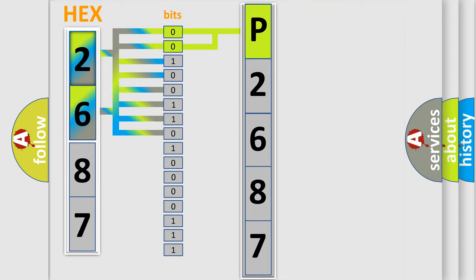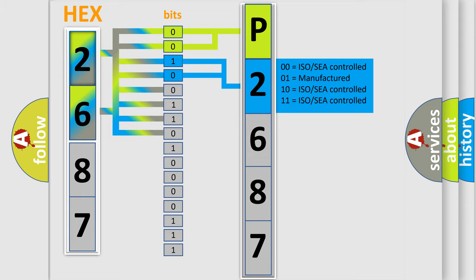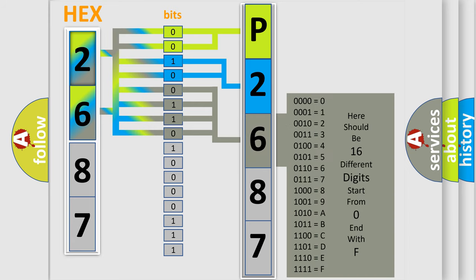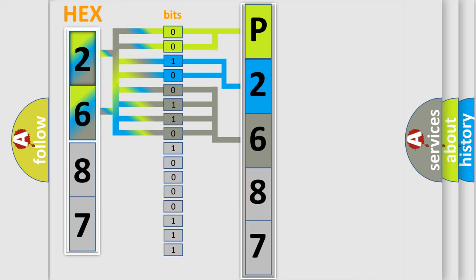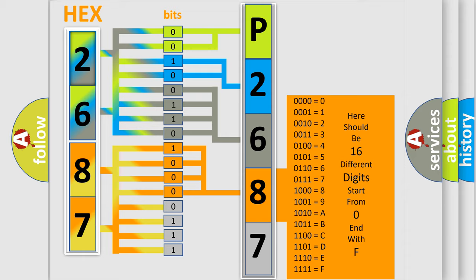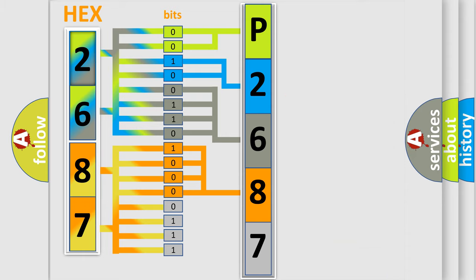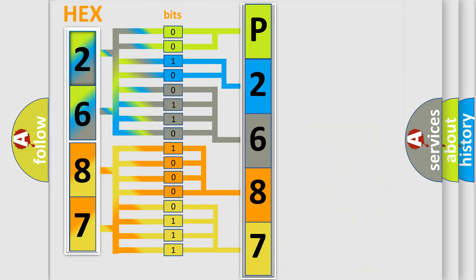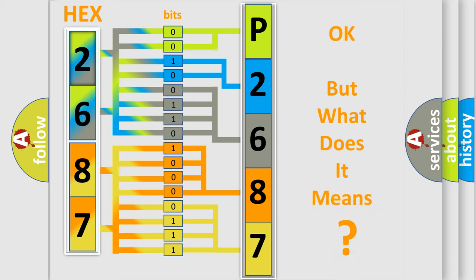The next two bits determine the second character. The last bits of the first byte define the third character of the code. The second byte is composed of a combination of eight bits. The first four bits determine the fourth character of the code, and the combination of the last four bits defines the fifth character. A single byte conceals 256 possible combinations. We now know how the diagnostic tool translates the received information into a more comprehensible format.